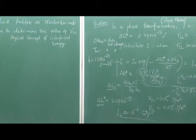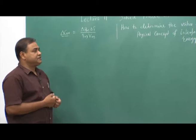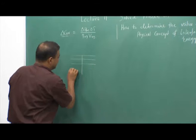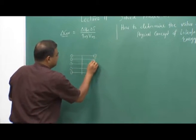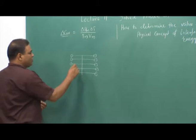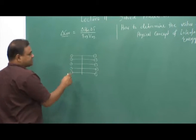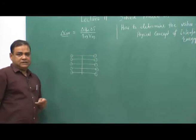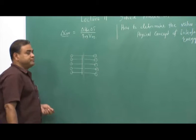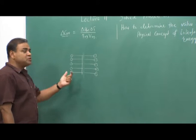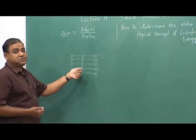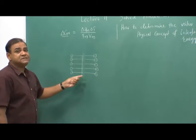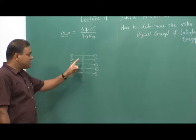In order to understand interfacial energy, consider a regular array of atoms at an interface. If there was no interface, atoms would be connected across it. Once we introduce an interface, these bonds are disturbed — in some cases completely broken. To break these bonds, we must supply energy because these atoms are very strongly attached. Whenever bonds are broken, it creates a positive energy on the surface, so it is not easy to break these bonds.